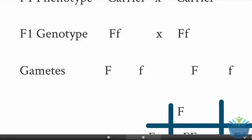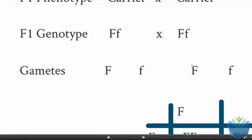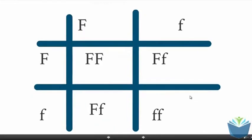Now, the next line down is the gametes. This is what the sex cells contain. In all sex cells, they only have half the genetic information. In half the gametes for, let's say, the father, half the sperm will contain the healthy allele and half the sperm will contain the ones that contain cystic fibrosis. The same is true for the mother's eggs. In this instance, half contains the healthy allele, half for the recessive cystic fibrosis causing allele.